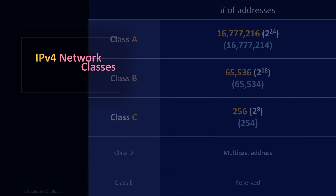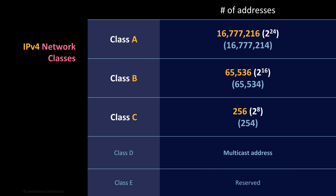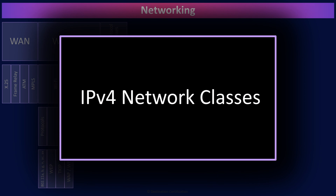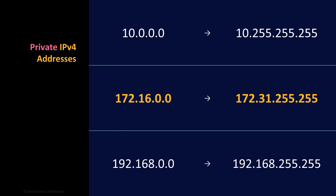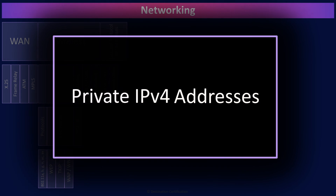The IP version 4 addressing system is divided into five classes. You don't need to be able to calculate subnet masks, but you should recognize these five classes and the number of addresses in each. Class A networks provide 2 to the power of 24 addresses — 16,777,214 usable addresses. Class B provides 2 to the power of 16 addresses — 65,534 usable addresses. Class C provides 2 to the power of 8 addresses — 254 usable addresses. Three ranges have been reserved for private networks: the entire 10.0 range, the 172.16 to 172.31 range, and the 192.168 range. Any of these private IP addresses are not routable on the internet.